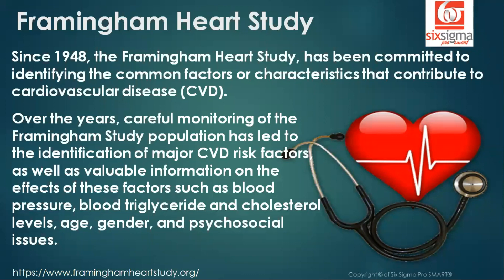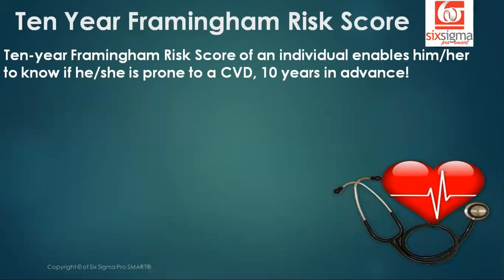For example, today everybody knows that it's bad to have high blood pressure, but in order to be able to say that something is high or something is low, you needed a threshold. You need a number. Those numbers and many such numbers are the outputs of this study. So as an output of this study, researchers are able to generate a 10-year Framingham risk score, which enables an individual to know if he is prone to a cardiovascular disease 10 years in advance.